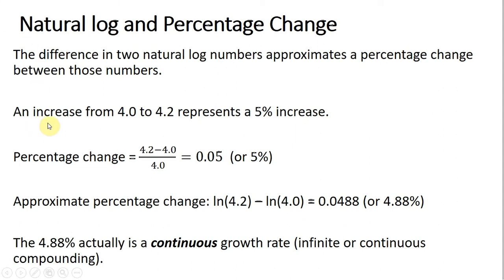So let's start here. Let's say some number increases from 4 to 4.2. This could be sales or GDP in trillions of dollars, whatever the case here is. This would represent a 5% increase. Using our standard percentage change formula, our ending value minus our starting value, dividing it by our starting value, equals 0.05.